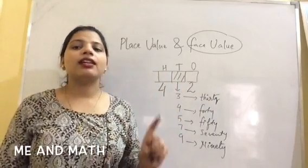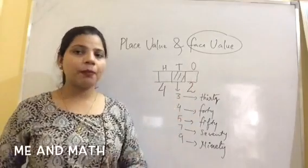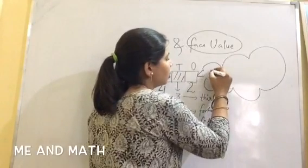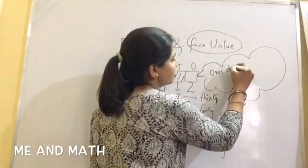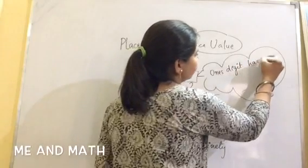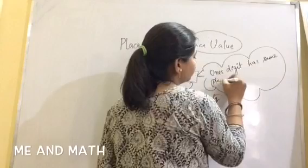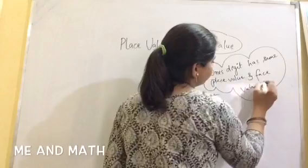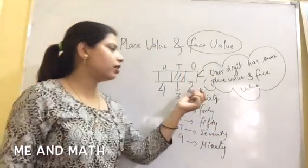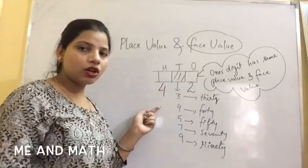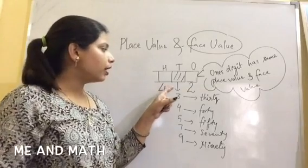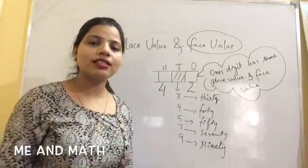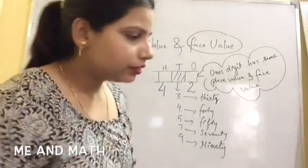We must remember: ones digit has same place value and face value. How it happens? As we can see, the number four, if it is written at hundreds column, we will call it 400. If it is in tens column, we will call it 40. But if it is in ones column, we will call it four only. We won't change its name, we will call it four only.